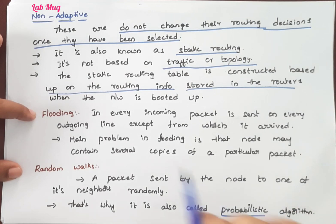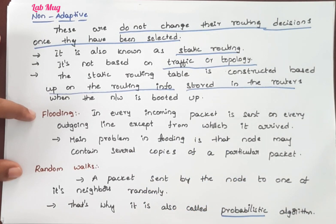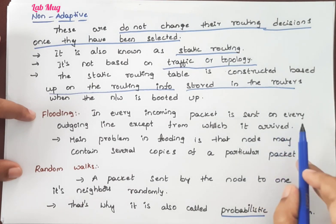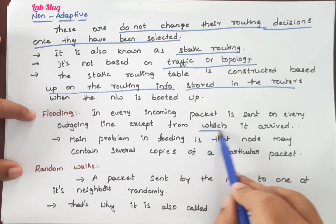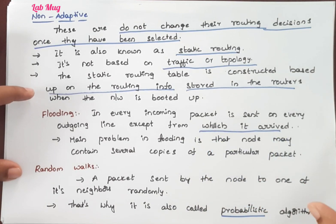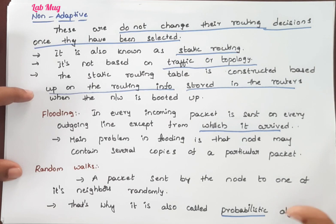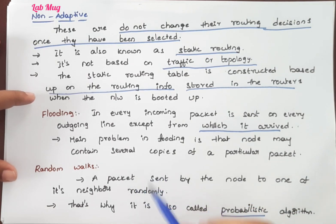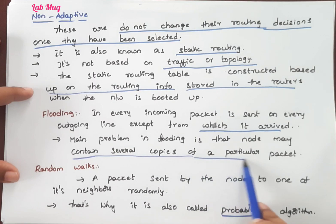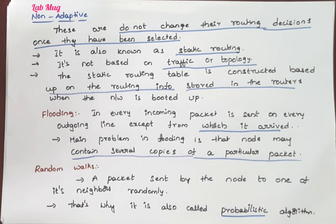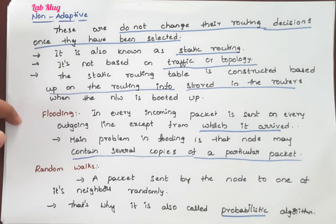In flooding, every incoming packet is sent on every outgoing line — except the line from which it arrived. So the remaining all outgoing lines forward the packet. The main problem with flooding is that a node may contain several copies of a particular packet — multiple copies are created from one packet. That is the main drawback of flooding.